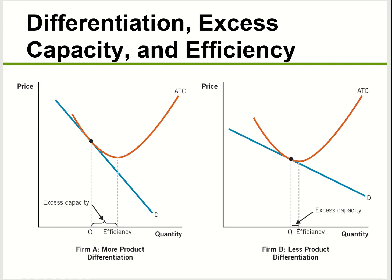For product differentiation — if your product has a very high degree of differentiation, your demand curve tends to be more inelastic because consumers have strong preferences, so it's more inelastic demand and prices are higher. But if you have a more elastic demand — like the pizza market where some consumers don't care which brand they choose — you get a flatter demand curve with lower prices.